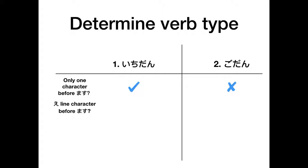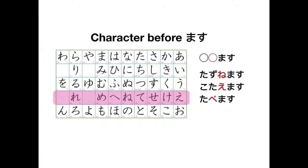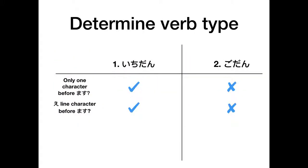If there's more than one character before masu, we look at the sound of the character directly before masu. There's three examples here on the right: tazunemasu, kotaemasu, and tabemasu. In these examples, the character before masu makes an e sound, so because of that, we know it's ichidan.